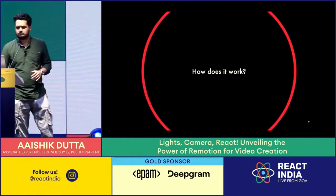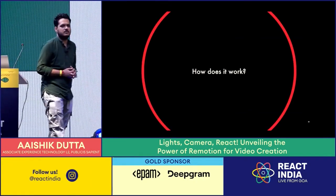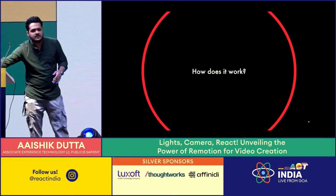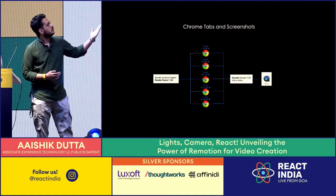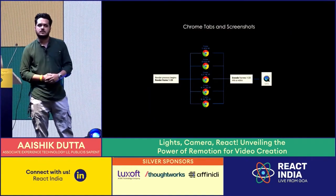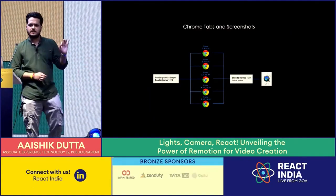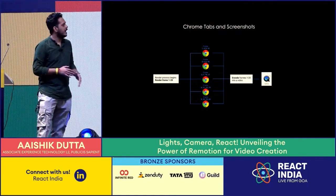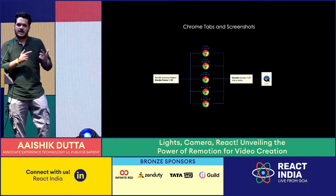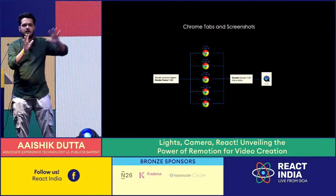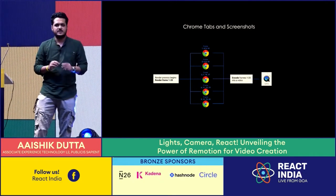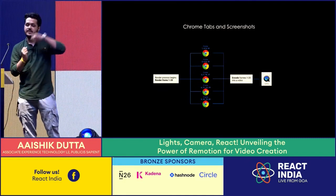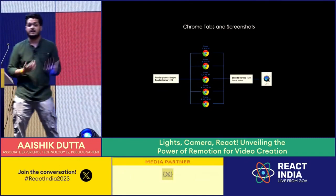How do your React components become videos? The answer is Chrome tabs and screenshots. Remotion gives you frame numbers to work with, and you create UI according to that frame number. Once the renderer starts, it fires off a bunch of headless Chrome tabs which take screenshots of each frame, and then they are stitched together using FFmpeg to give you the final video.